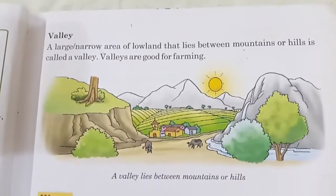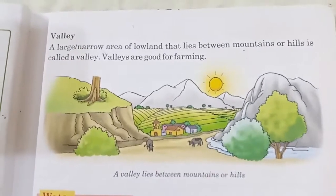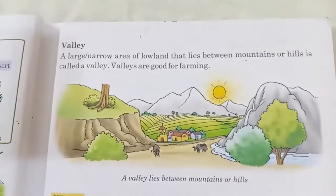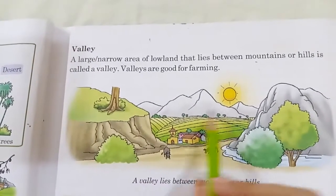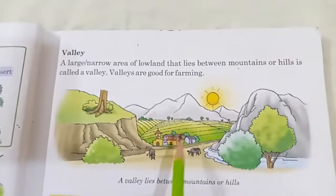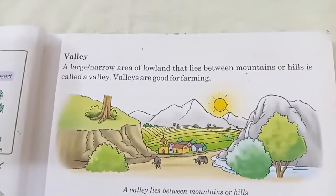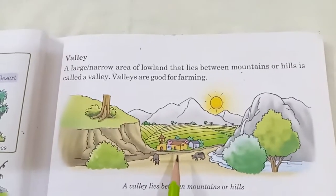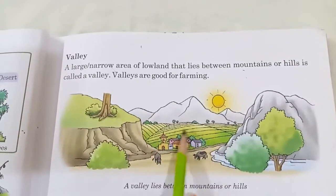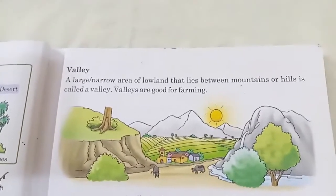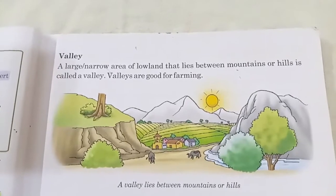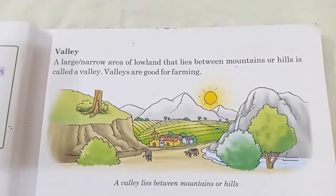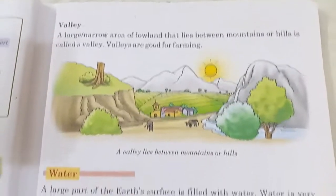Now come to the valley. Low land between mountains or hills is called a valley. This land is good for growing crops and is very beautiful. In Pakistan, Naran and Kaghan are valleys.